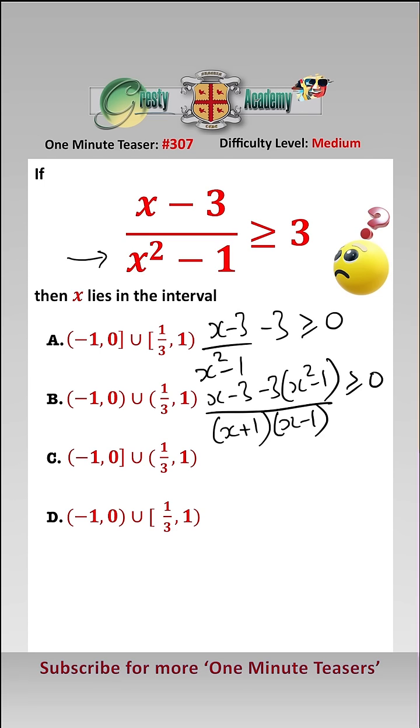Greater than or equal to 0. So tidying this up, we have x minus 3x squared over x plus 1, x minus 1 is greater than or equal to 0.